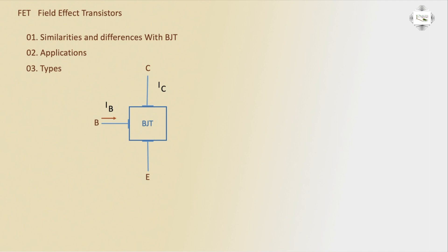IC collector current flows in transistor. FET field effect transistor has three terminals: first terminal is gate, second terminal is drain, and third terminal is source.